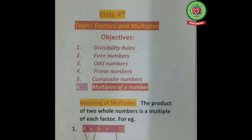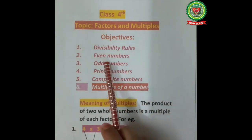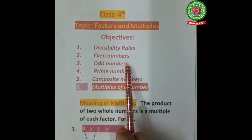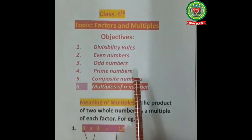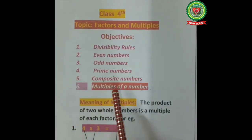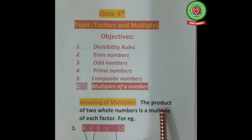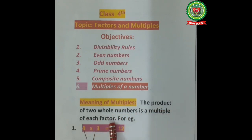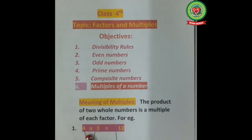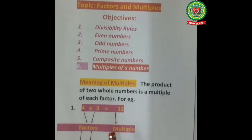Dear students, in the topic of factors and multiples we have already done divisibility rules, even numbers, odd numbers, prime numbers, and composite numbers. Today we will learn to find multiples of a number. The product of two whole numbers is a multiple of each factor. For example, 4 multiply 3 is equal to 12.